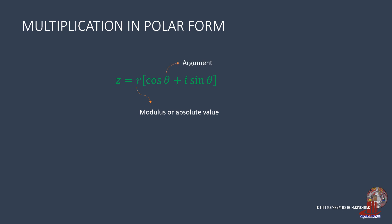In multiplication of complex numbers in polar form, all we need to do is multiply the moduli and then add the arguments.